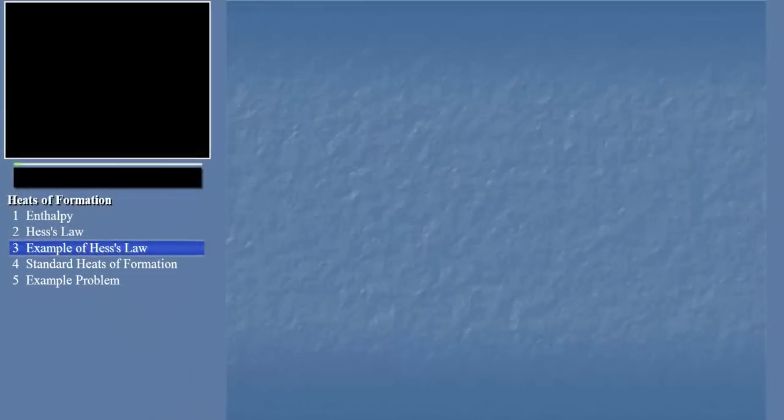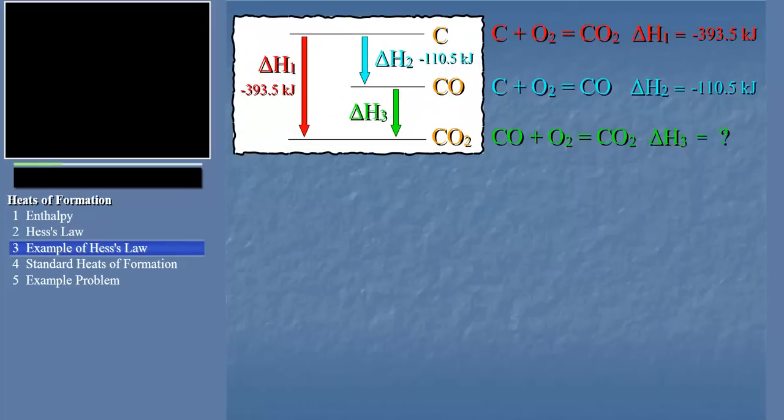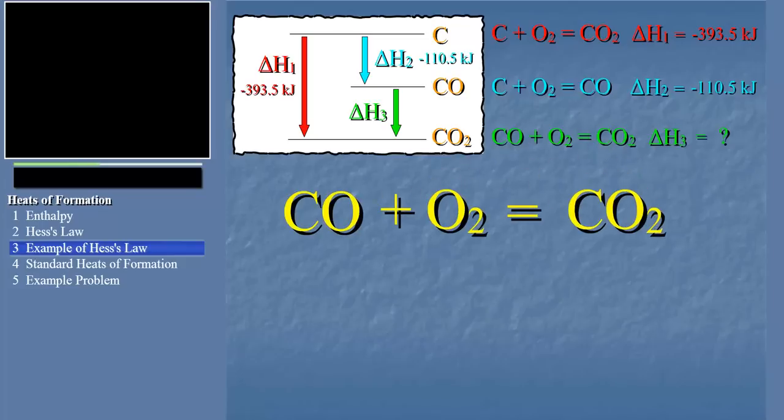By way of example, let's use Hess's law in the carbon combustion case to calculate an unknown delta H value from known values. Here's our diagram again, this time showing delta H values for only two of the three reactions. Now, how can we calculate delta H for the reaction CO plus O2 equals CO2?